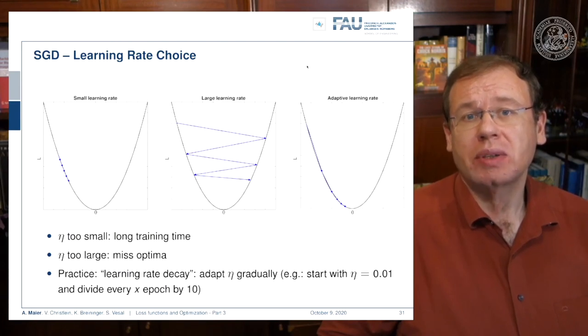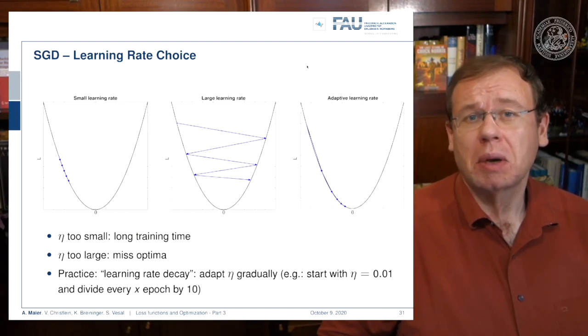So you adapt your eta gradually—you start with, let's say, 0.01 and then you divide by 10 every x epochs. This helps that you don't miss the local minimum that you're actually looking for. It's a typical practical engineering parameter. The stuff that works best is really simple.